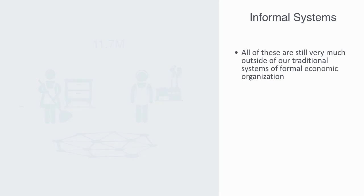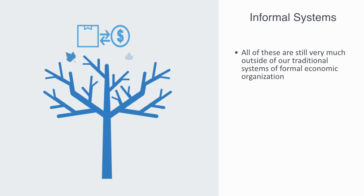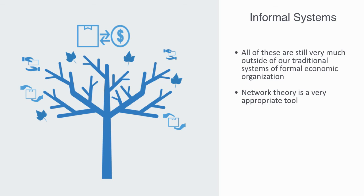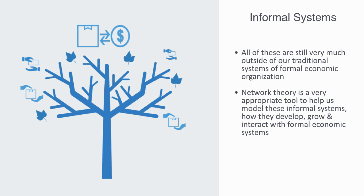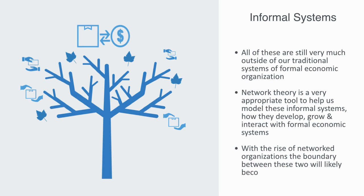These informal network structures have developed in an organic fashion wherever there was a need for an economic function to be performed that lay outside of our traditional institutions. Network theory is a very appropriate tool to help us reason about these informal systems, how they develop, grow, and interact with formal economic systems. And as we get this unbundling process of formal organizations and the rise of networked organizations, the boundary between formal and informal will likely become more blurred.